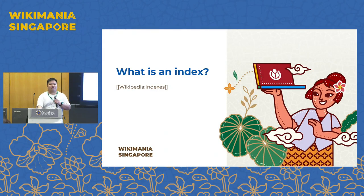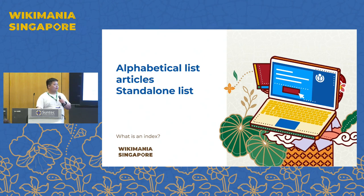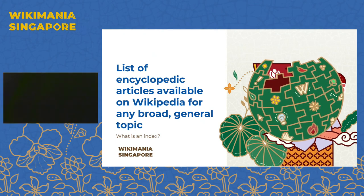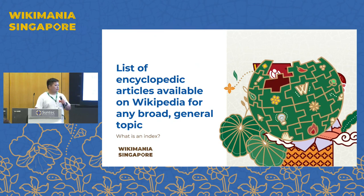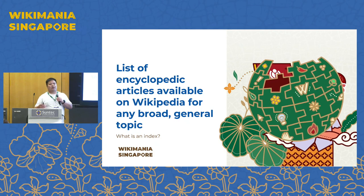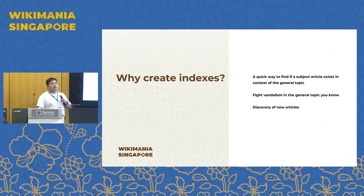People with technical knowledge will get the gist of how to extract the information. So first — what is an index? For those who don't know, it's just an alphabetical list of articles. It lists all articles available on Wikipedia for any broad general topic, such as Singapore-related articles, or any other country like Malaysia or Japan, or even thematic topics.